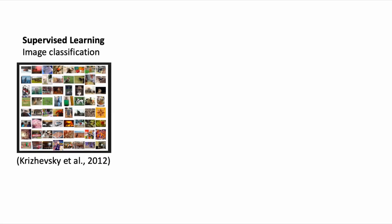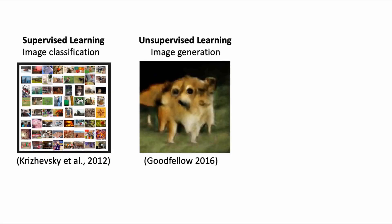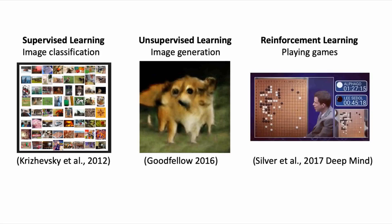We went over examples of deep learning breakthroughs for all three types of problems. For supervised learning, we talked about the success in image classification, classifying images on the ImageNet data set. For unsupervised learning, we showed deep learning models that were capable of generating fairly representative images. In reinforcement learning, we talked about the success of deep reinforcement learning models that were able to learn by themselves to play games.